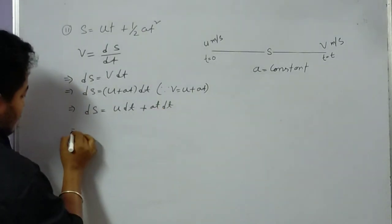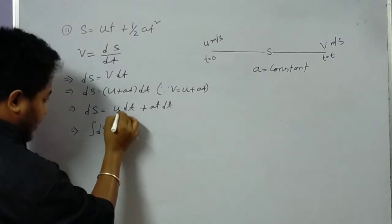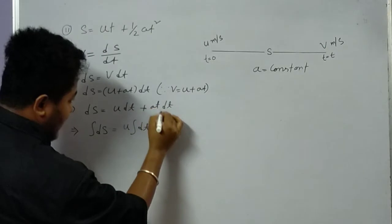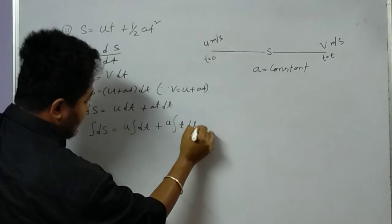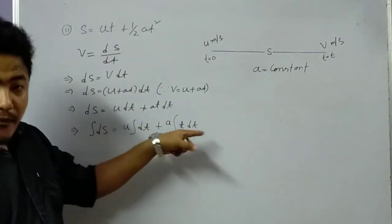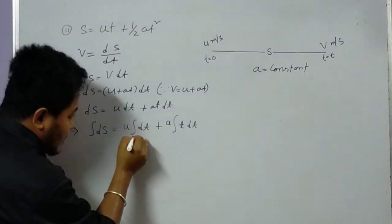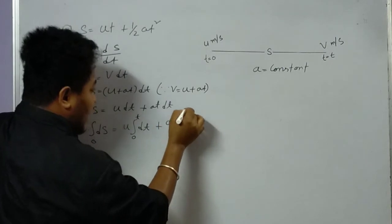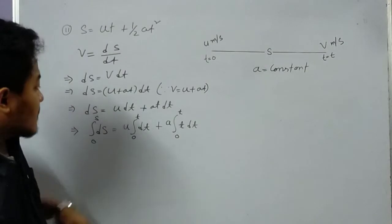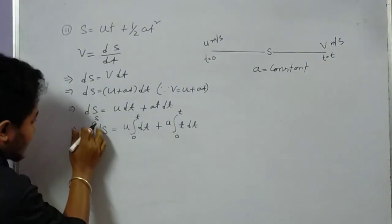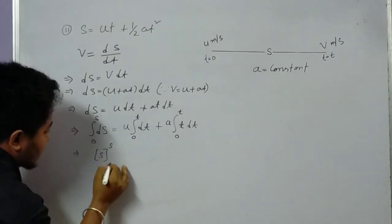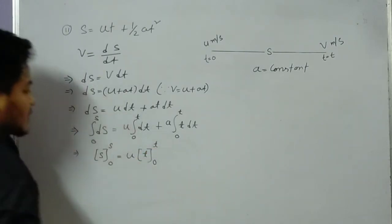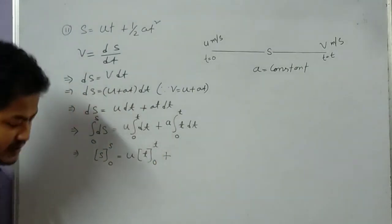Now integrating both sides: the integral of ds equals u times the integral of dt (since u is constant) plus a times the integral of t dt (since a is constant). We apply limits: when time is 0, displacement is 0 (lower limit), and when time becomes t, displacement becomes s (upper limit).